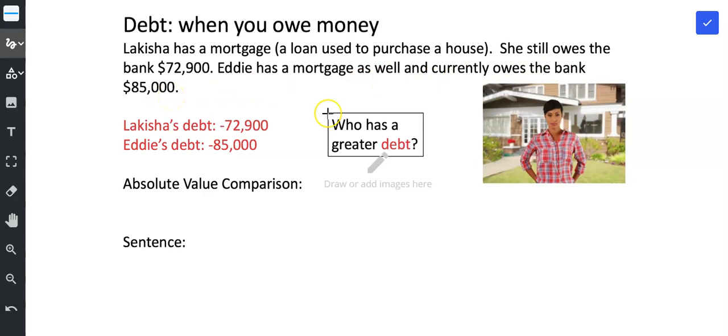So we are being asked who has a greater debt. Lakeisha's debt is negative $72,900. Eddie's debt is negative $85,000. So we're going to start with our absolute value comparison. We're going to be comparing the absolute value of negative $72,900 and compare that to the absolute value of negative $85,000.